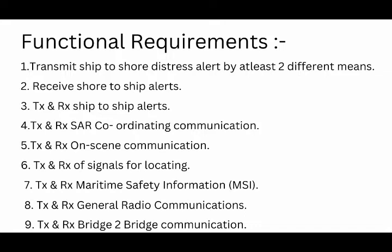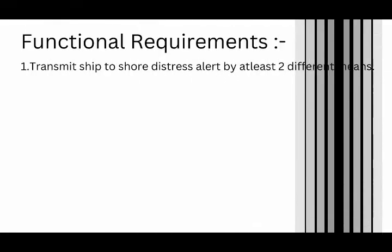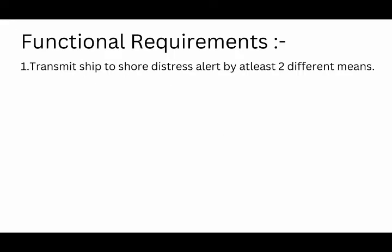Point number one: transmitting ship-to-shore distress alerts by at least two separate and independent means, each using a different radio communication service. For this, ship-to-shore distress alerts require any two different means. Examples for this are DSC — digital selective calling — in VHF, MF/HF, or Inmarsat EPIRB. All these have the facility of transmitting ship-to-shore alerts.